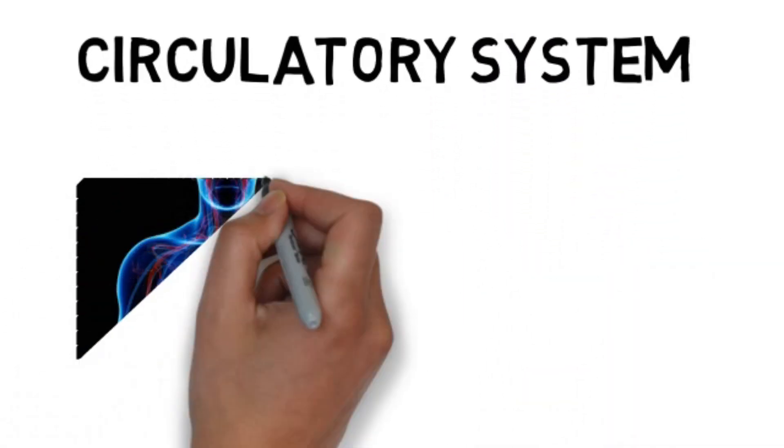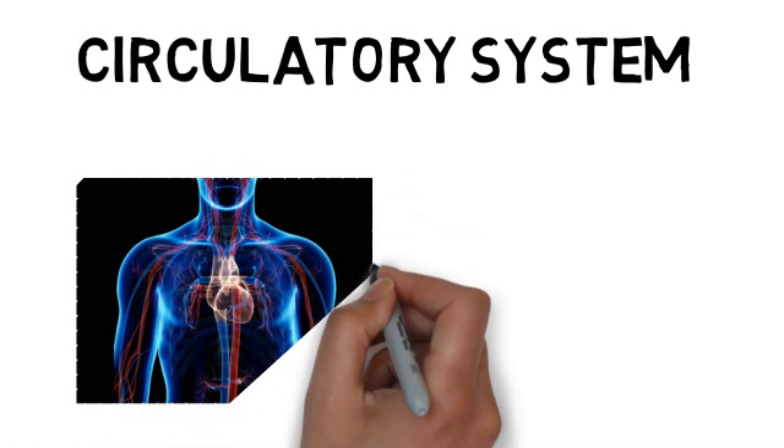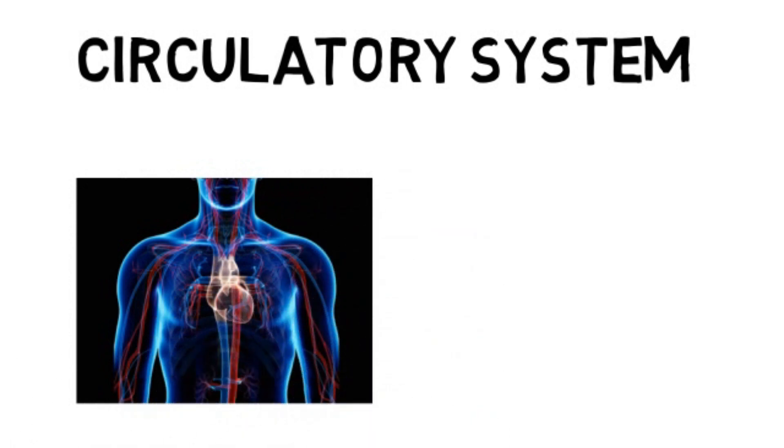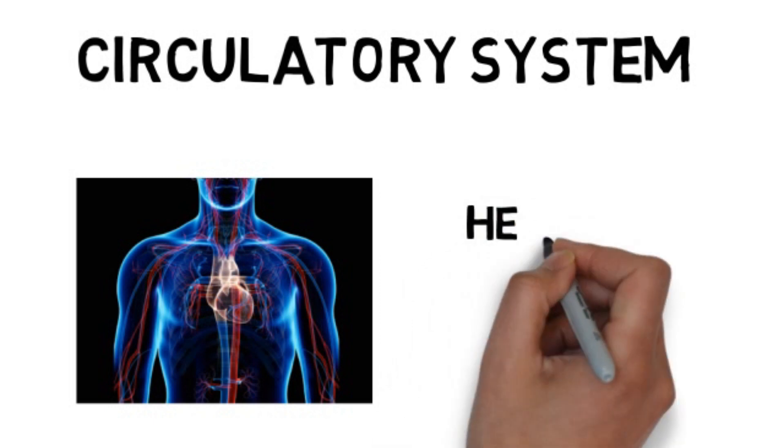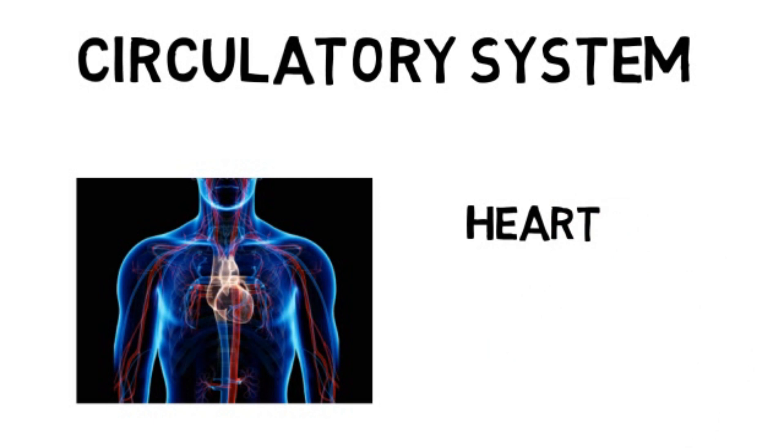Circulatory system. Let's have a look at this picture. This system consists of the blood vessels and the very strong muscles. The strong muscles is what we call the heart. Heart is the main organ of the system, and the function is to pump the blood.